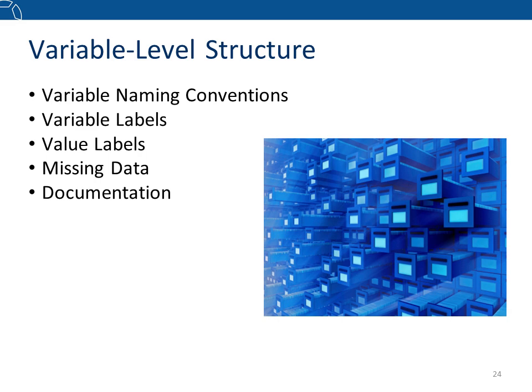Let's start with the first level of your data collection: the variable level. There are several variable-level elements to think through prior to collecting data, including naming conventions, variable and value labels, missing data, and variable-level documentation. There are some differences between statistical and non-statistical data to point out. By statistical data, we mean any numerical data, most commonly arranged in tabular form with rows and columns. By non-statistical data, we mean any data that are not numerical — including text data, images, audio, or video.